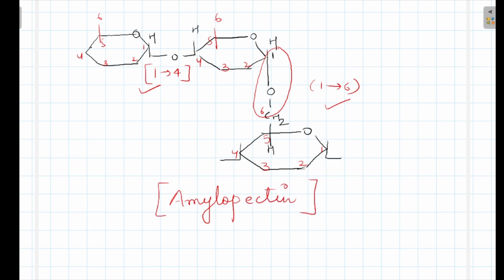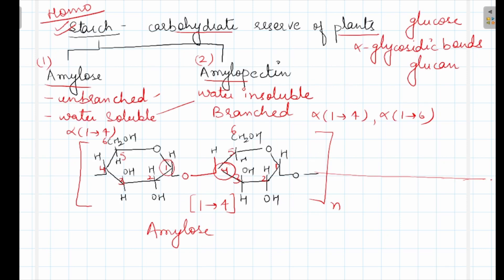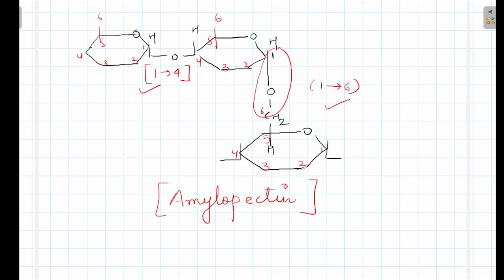Amylose and amylopectin: amylose is unbranched, amylopectin is branched. Amylose is water-soluble, amylopectin is water-insoluble. Amylose contains alpha-1,4 bond. Amylopectin contains alpha-1,4 and 1,6 bond — both are present.